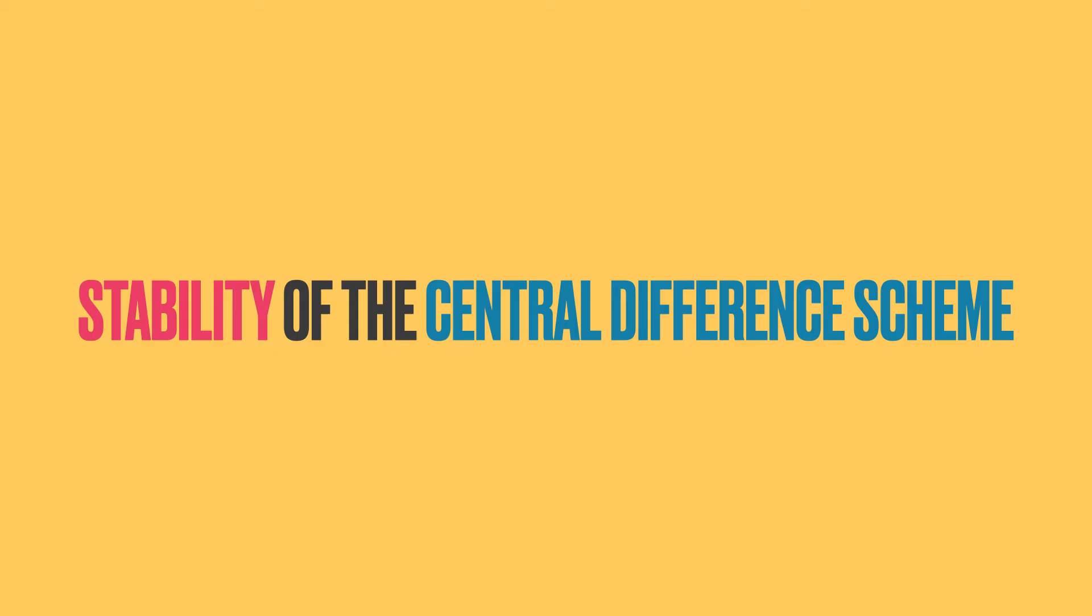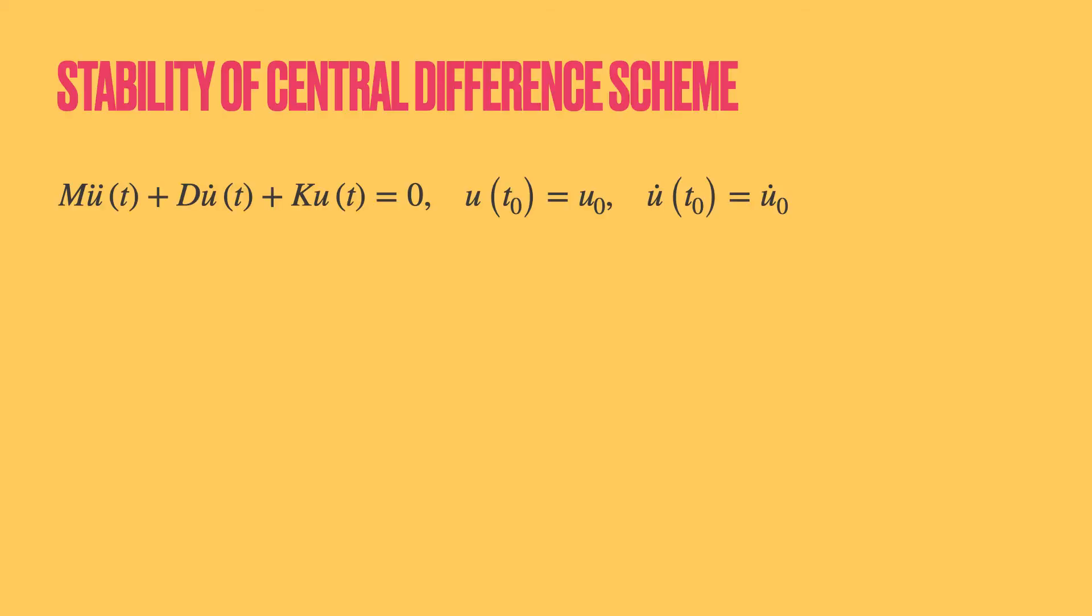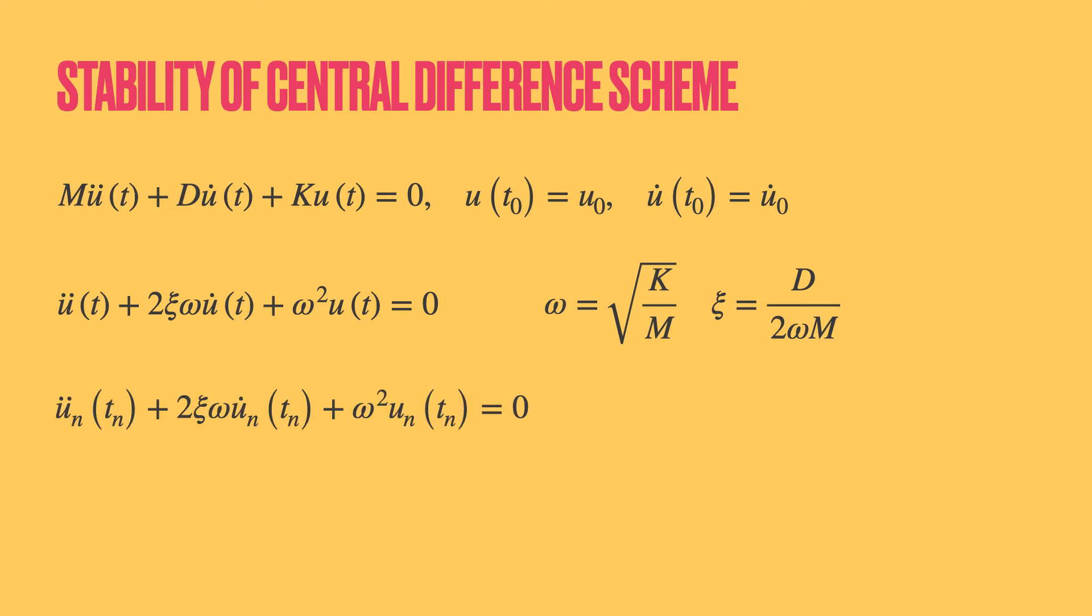Now let us look at the stability of the central difference scheme. For the stability analysis, we will introduce the central difference approximations into the one degree of freedom system with mass m, damping d, and stiffness k. We can also write this equation in terms of the angular frequency omega and damping factor c. This is just an alternative formulation that will make things mathematically easier later and helps link the stability of the method to the time period of the system.